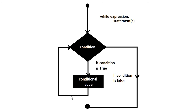But if the condition is false, it will go out of the control of the while loop and immediately terminate the program. This is a basic flowchart about the working of the while loop. Let's move on to PyCharm so that I can show you certain examples to give you a better idea.